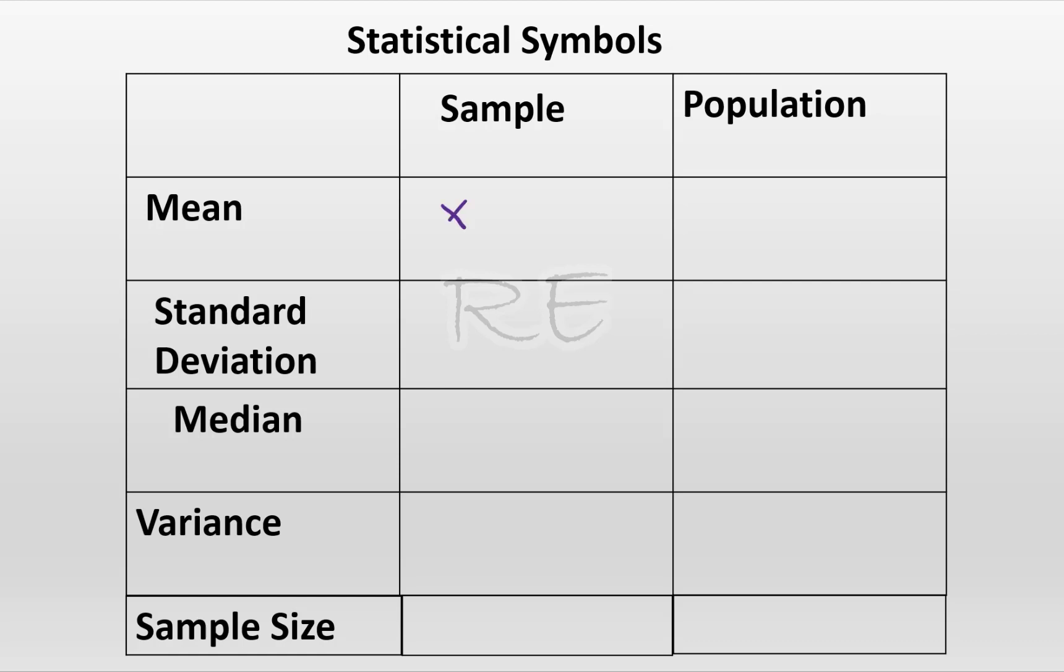For the sample, the mean is called X bar. It's an uppercase X. For the population, the mean is called mu, the Greek letter mu, which means an M.